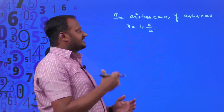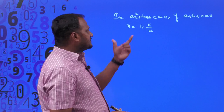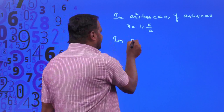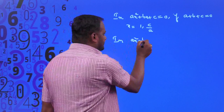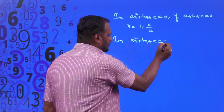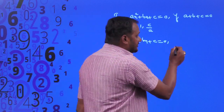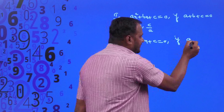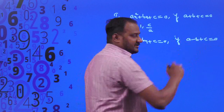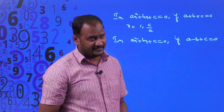Now let us continue with these strategies. Suppose in this quadratic equation Ax² + Bx + C = 0, instead of A + B + C = 0, if A minus B plus C is equal to 0, then what will be the roots of the given quadratic equation?